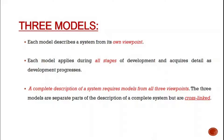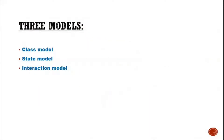A complete description of a system requires models from all three viewpoints. These three models are separated parts of the description of a complete system but are all cross-linked. The three models are: the class model, the state model, and the interaction model. We have come across all three models in the first chapter of Module 1, but here we study them in detail.